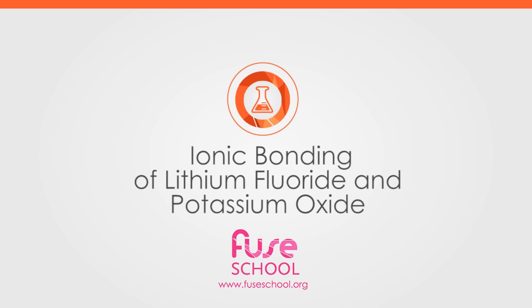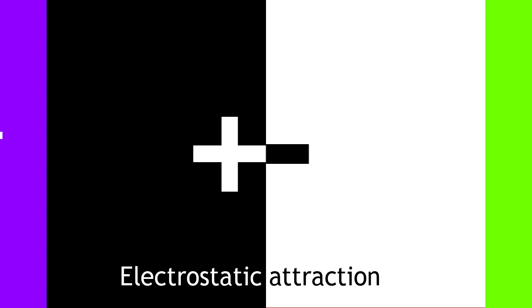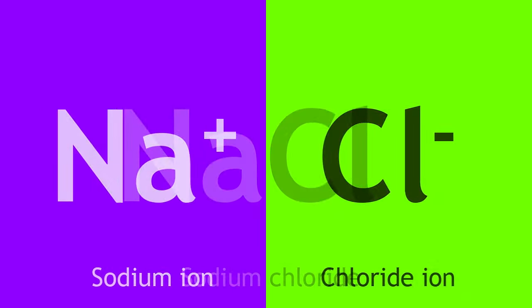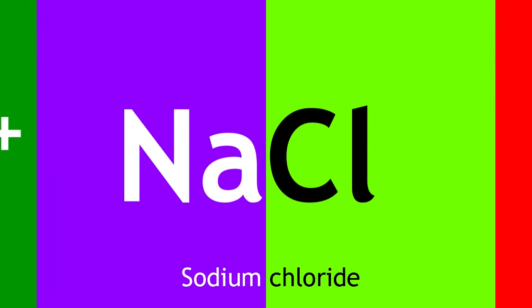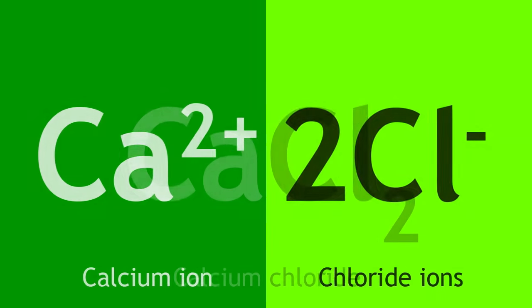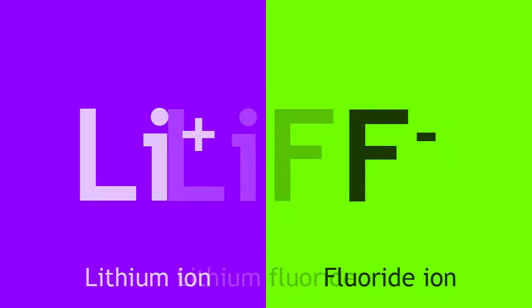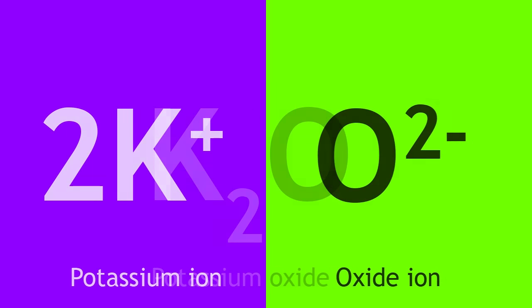An ionic bond is defined as the electrostatic attraction between oppositely charged ions. In the previous lesson, we learned about ionic bonding in sodium chloride, magnesium oxide, and calcium chloride. In this lesson, we will learn about ionic bonding in lithium fluoride and potassium oxide.